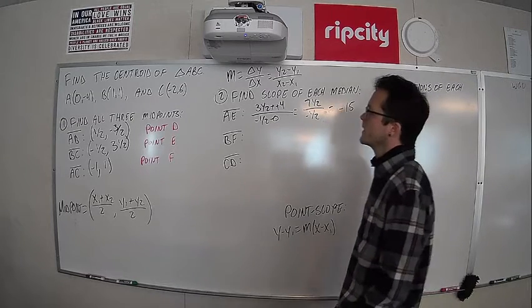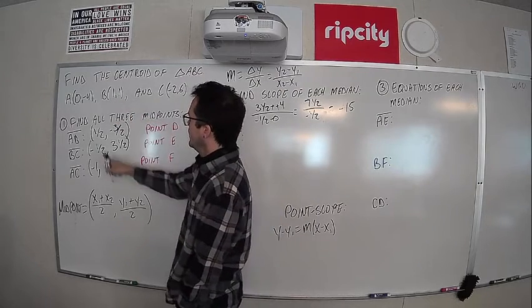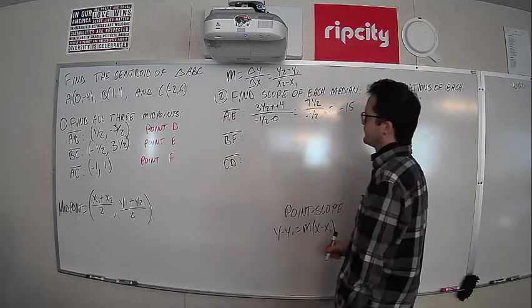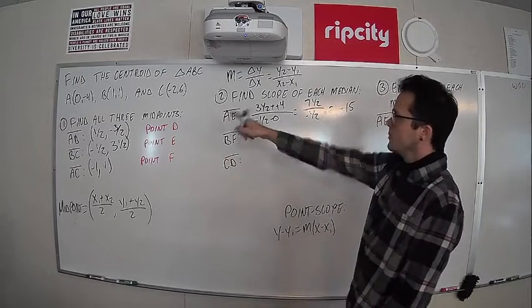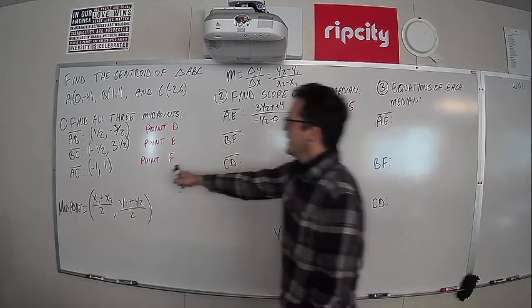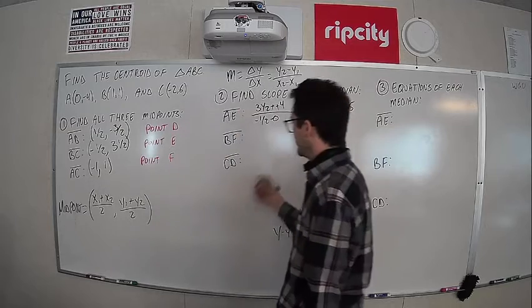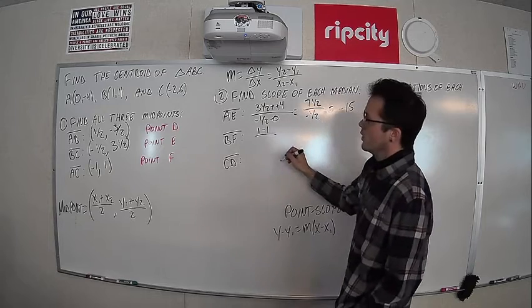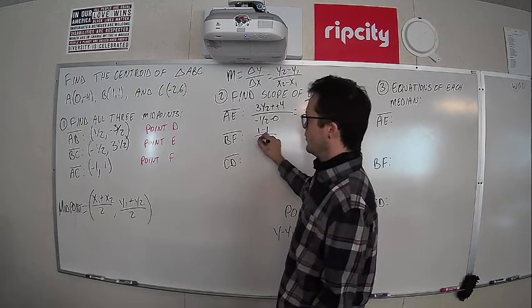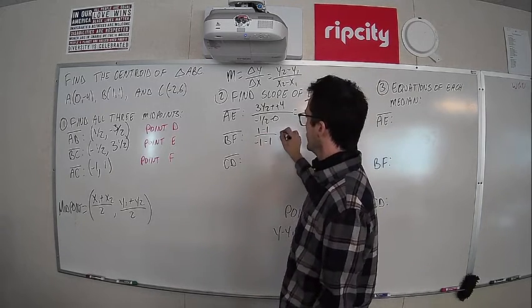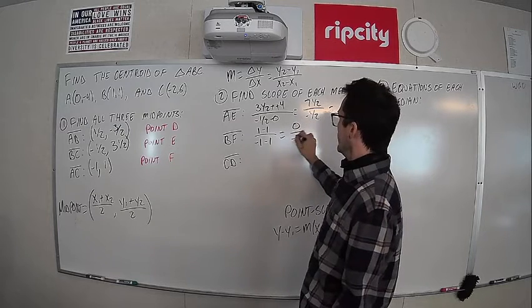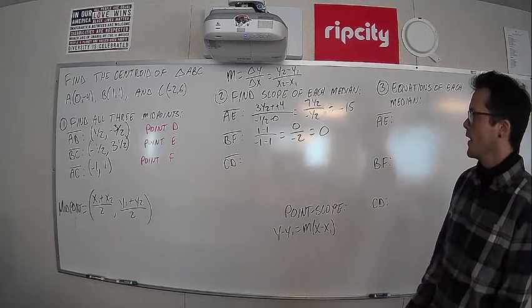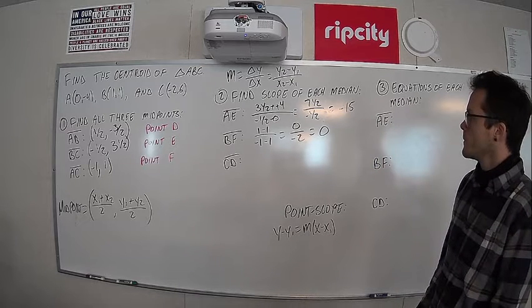Okay. B, F. So this is, B is at 1, 1. F is this point, negative 1, 1. Let's call B our X1, Y1, and F our X2, Y2. So on top here, we're going to have 1 minus 1. That's our two Y values. And on the bottom, we're going to have negative 1 minus 1. Getting 0 over negative 2, which, of course, is 0. Slope of 0 there.